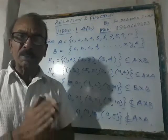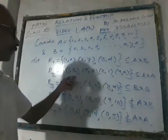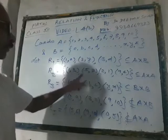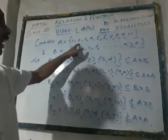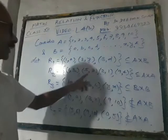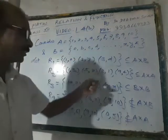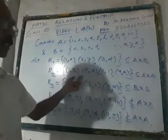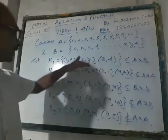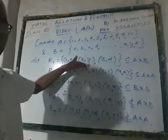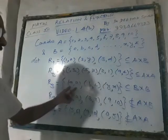Just go on watching the first components of R2: 1, 5, 2, and 9 — they are in A. Again the second components 3, 7, 1, and 4 — they are also in A. Naturally, R2 is a subset of A cross A, so R2 is a relation on A, whereas R1 is a relation from A to B.